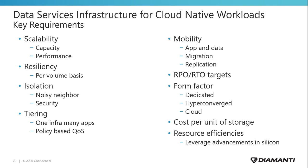Another key point in this checklist is form factor — are we looking for a storage-only system, a hybrid converged system, or a cloud or hybrid cloud architecture? Cost is very important: what is the cost per unit of storage with respect to replication, scalability, and overall storage? And given the growth of data and information, resource efficiency also matters — are there ways to leverage advancements in silicon to achieve an optimal cost per unit of storage and hardware resource utilization to meet all of these requirements?